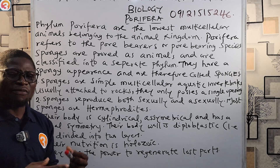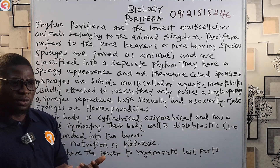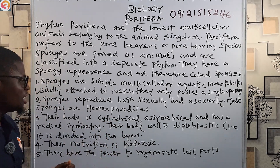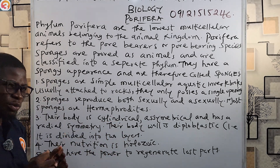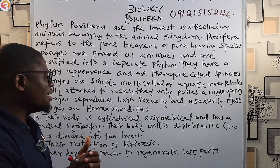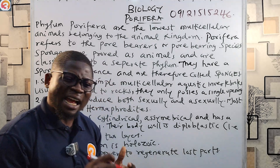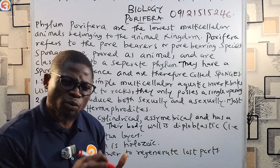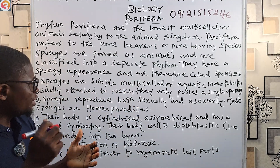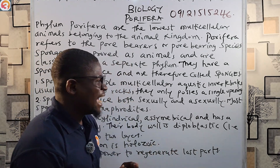Sponges reproduce both sexually and asexually. They reproduce asexually by budding and fragmentation. Most sponges are hermaphrodites, meaning they have both male and female sex organs or tissues.